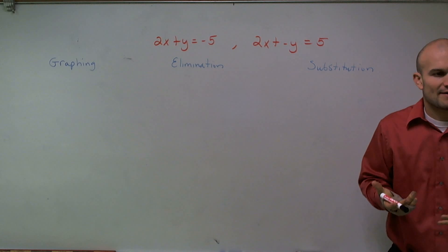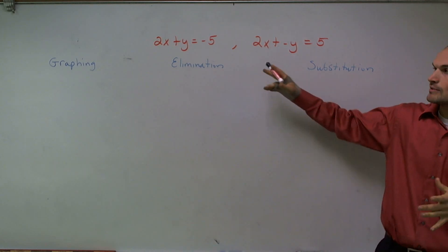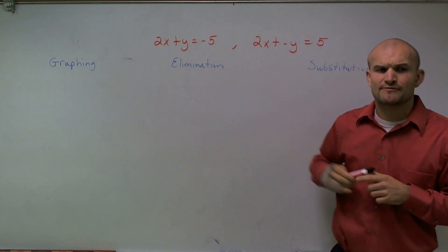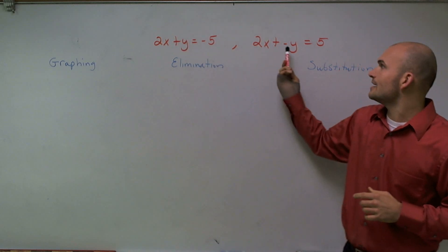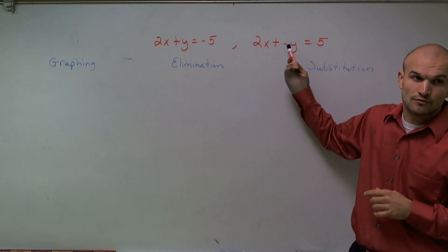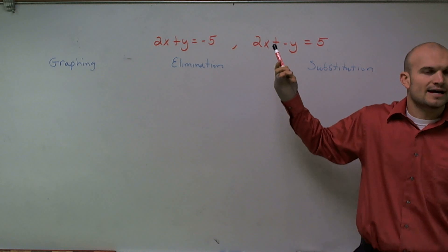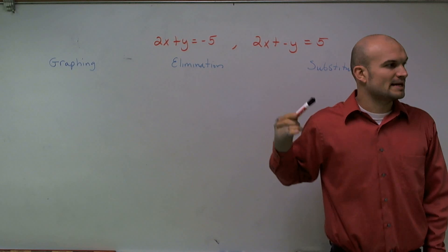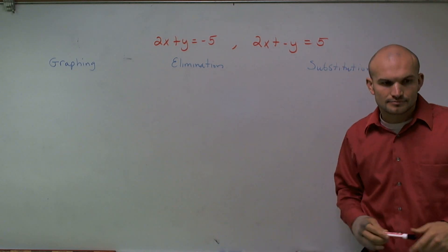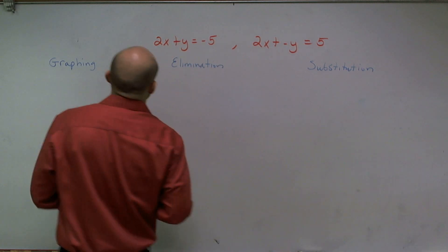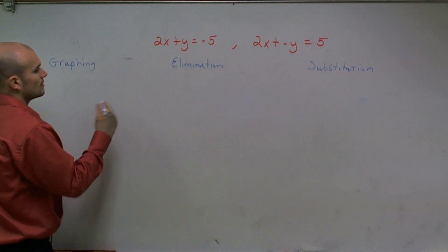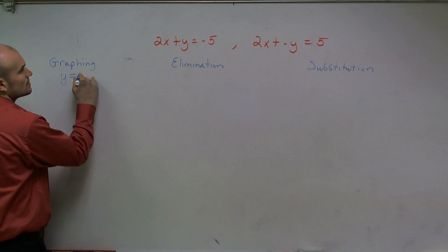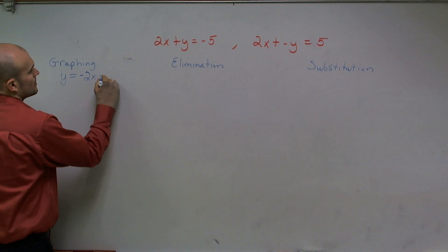So first thing is graphing. I'm just going to use a basic graphing. When graphing, I'm going to solve these both for y. And that's why when I look at this problem, I said, well, graphing would be fairly simple. They both do not have a coefficient, except for this one is a negative 1. But their coefficient is 1 and negative 1. It's very simple to get the rest of them solved for y. I'm going to solve for y, put them in mx plus b form, and then graph. So to solve this for y, I subtract the 2x on both sides. And I get y equals negative 2x minus 5.